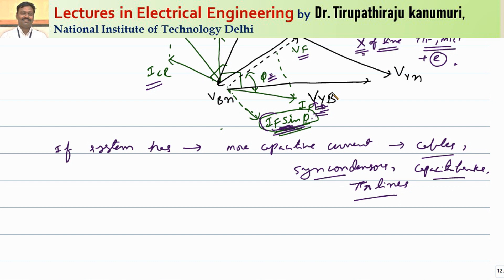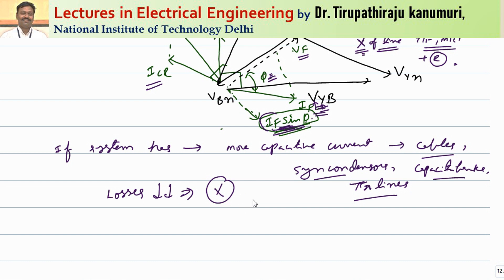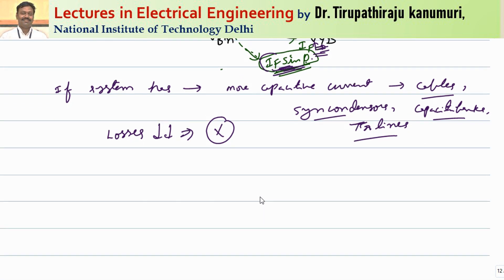In order to avoid those losses, we go for reactance because the advantage of a reactor is that its resistance value is minimum, so automatically the losses will decrease. In order to decrease losses, we use reactance instead of resistance — that is called reactance grounding.